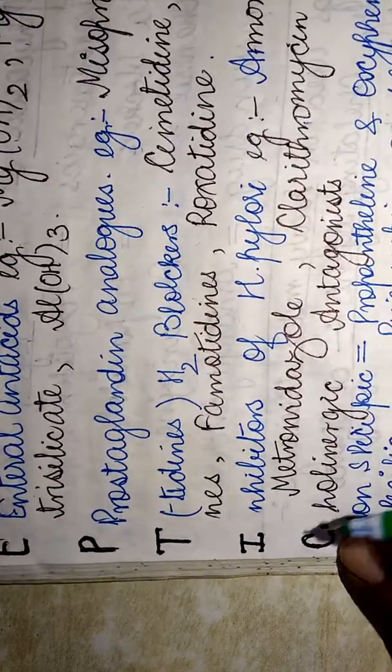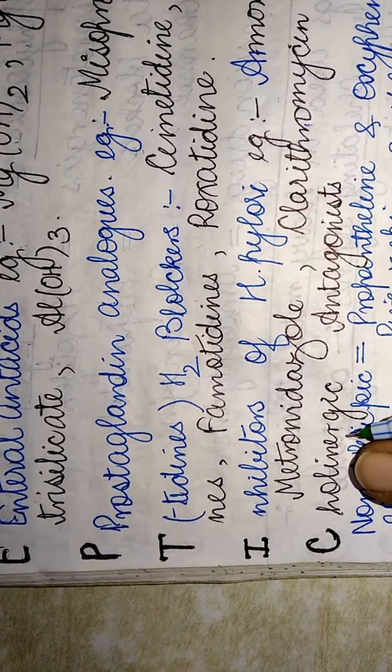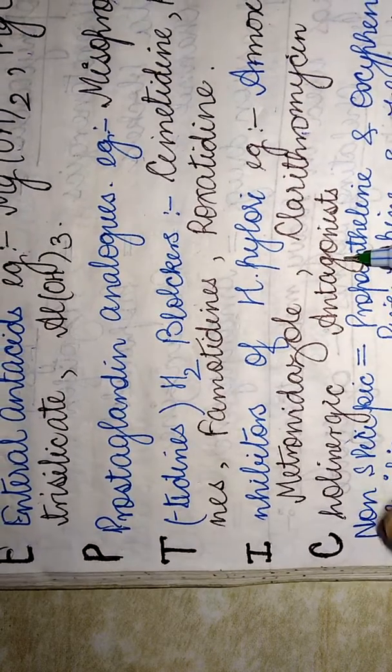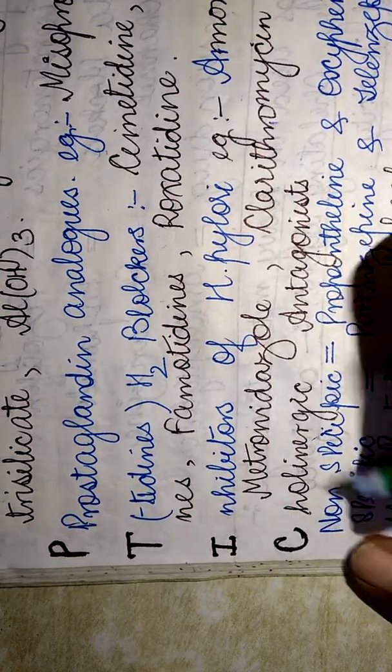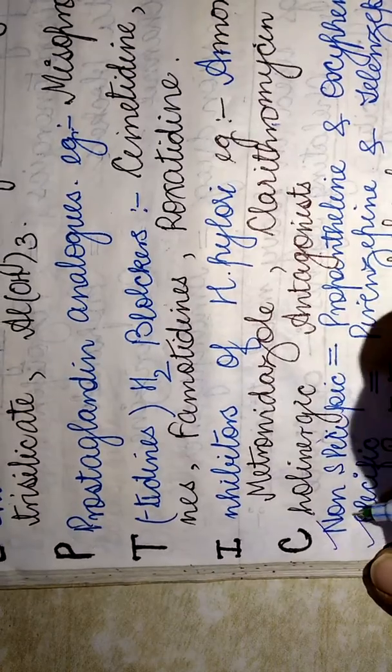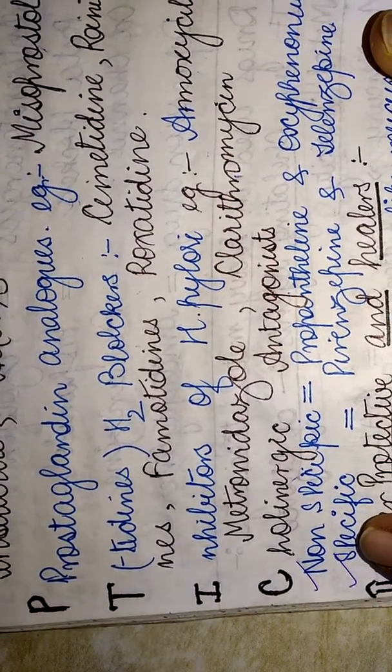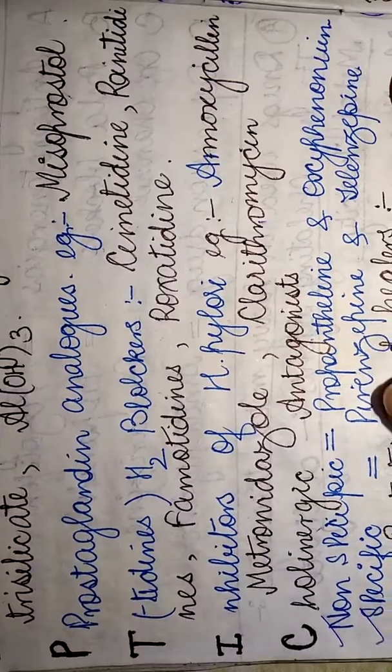C for PEPTIC stands for cholinergic antagonists. It can be broadly classified into two categories: non-specific and specific. The non-specific include propantheline and oxyphenonium.